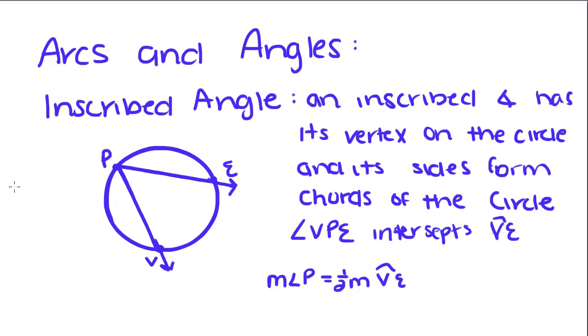Staying with the topic of arcs and angles, we're going to talk about a special kind of angle called an inscribed angle. An inscribed angle has its vertex on the circle, so this angle's vertex is P and it's on the circle, and its sides form chords of the circle. Its other points have to form chords of the circle, which this does.